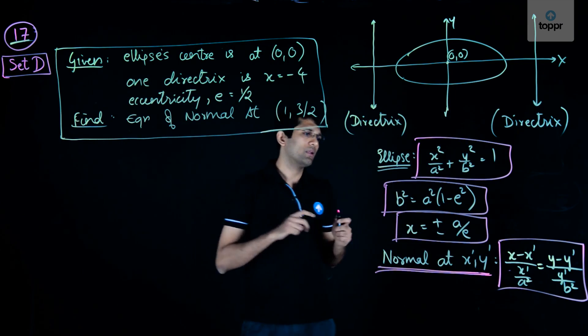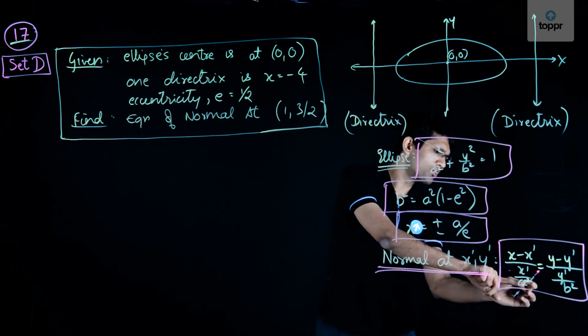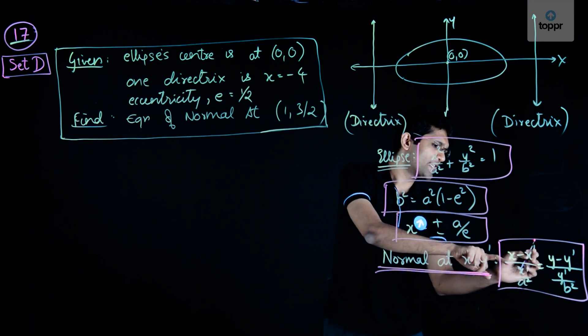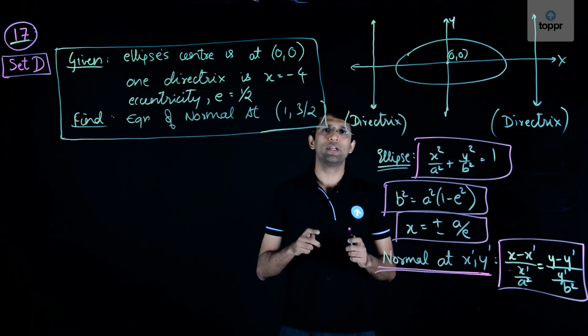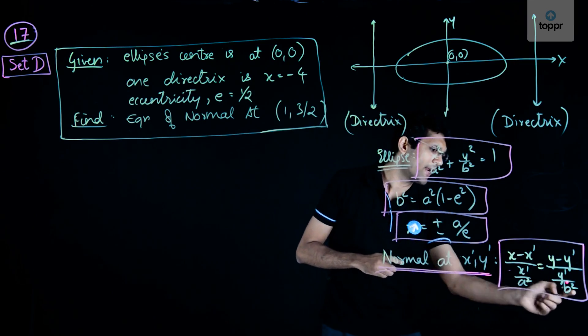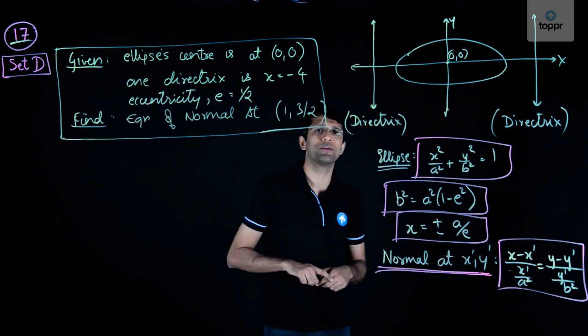Note that here we need the values of a² and b², because x' and y' are already given to us. So the only values we now require are those of a² and b². Let us try finding those values.